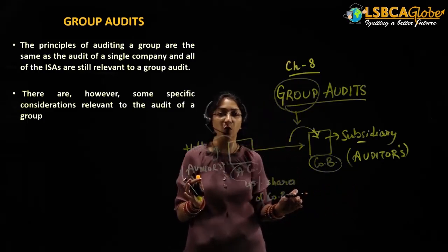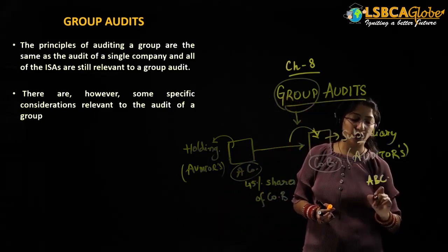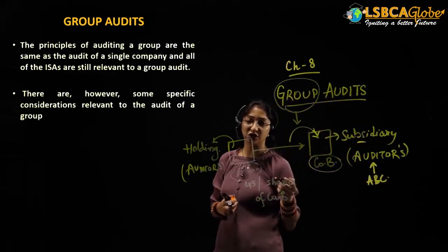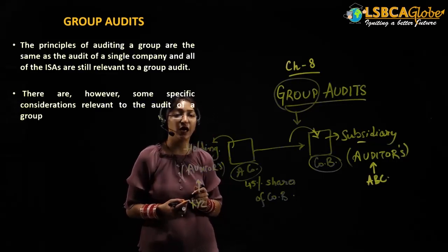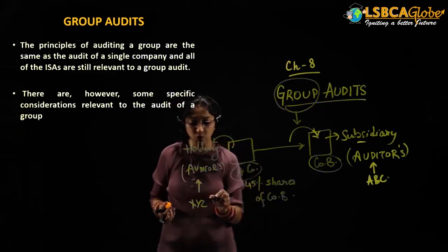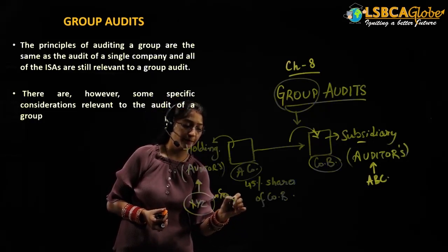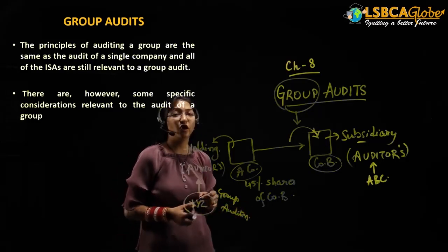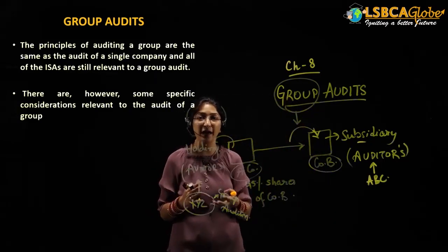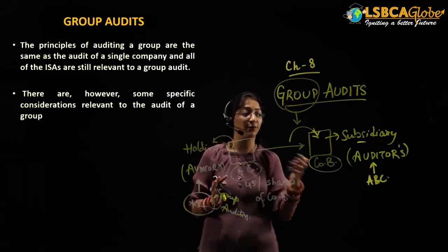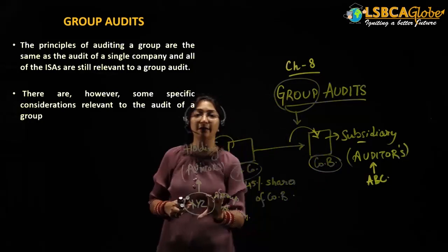There can be separate auditors for the holding company as well as the subsidiary company. Say firm A, B, C is auditing the financials of the subsidiary, and X, Y, Z auditors are auditing the books of the holding. X, Y, Z — who are auditing the books of the holding — will be known as the group auditors. As per auditing and accounting standards, while preparing the financials of the holding company, we have to consolidate the books of the subsidiary company. That process is known as consolidation of books, and it will be done by the group company auditor.